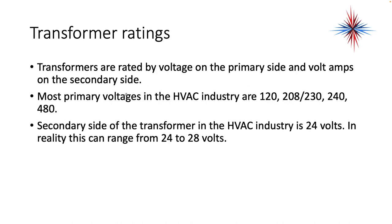Transformers are rated by the voltage on the primary side and volt amps on the secondary side. Most primary voltages in the HVAC industry are 120, 208-230, 240, and 480. The secondary side in the HVAC transformer industry is 24 volts. In reality, this range can be between 24 and 28 volts. Most transformers I've come across are actually producing 26 volts without a load, and with a load they're around 24 volts.